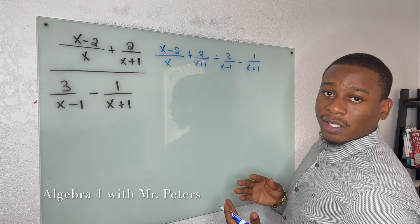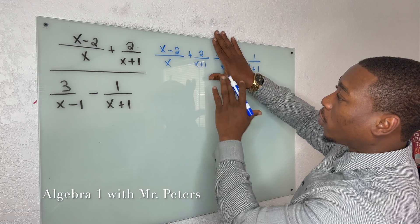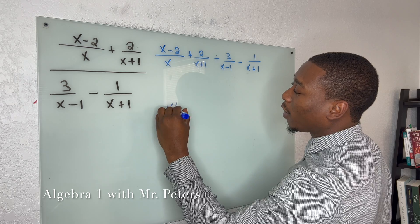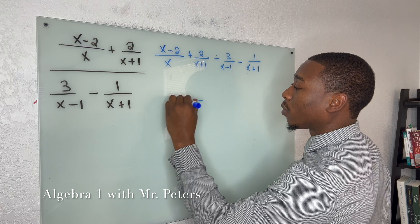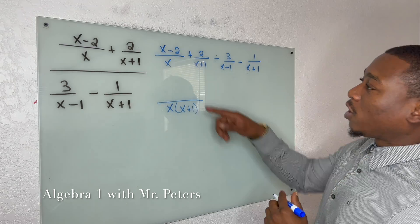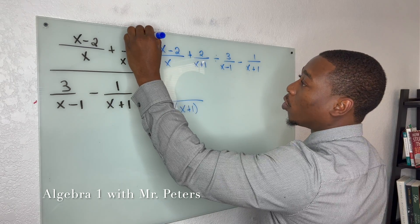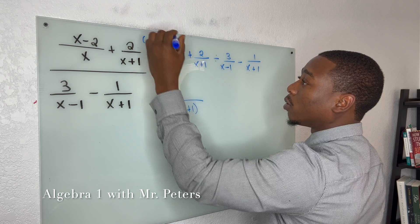So I'm going to split this into kind of two problems. I'm going to focus on this side first. So we have a common denominator of x times x plus 1. So when we look at x minus 2, for it to have this same common denominator, we're going to multiply by x plus 1.